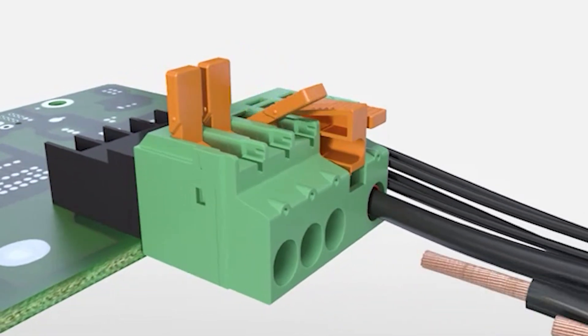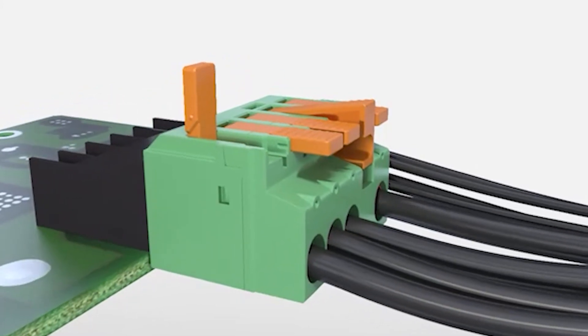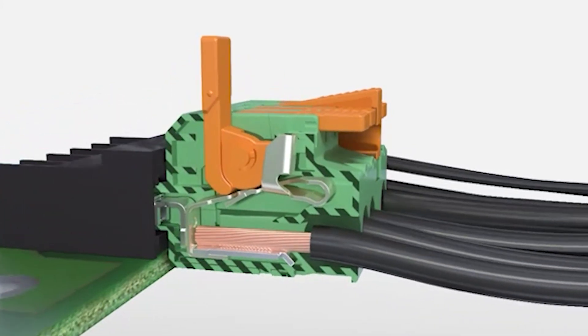Properly stripped wire or a wire with a ferrule is inserted into the wire opening of the connector and the lever is closed, completing the connection.